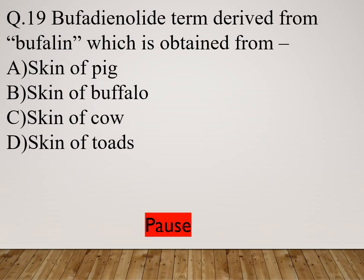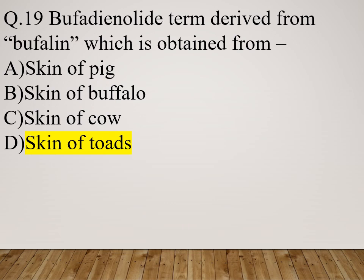Question 19: Bufadienolide — the term is derived from bufeline, which is obtained from: Option A: Skin of beak. Option B: Skin of buffalo. Option C: Skin of cow. Option D: Skin of toads. The right answer is skin of toads.